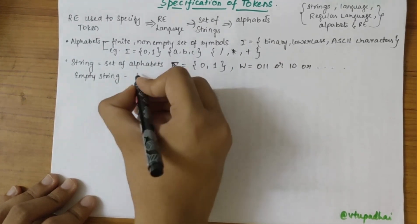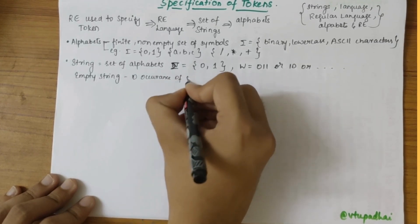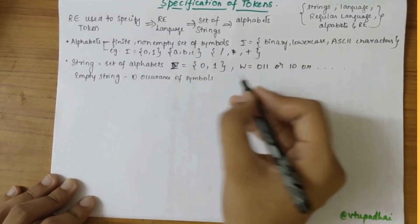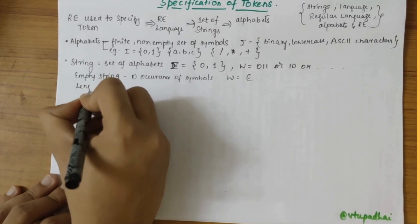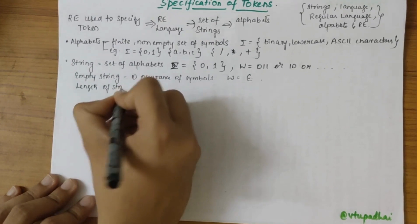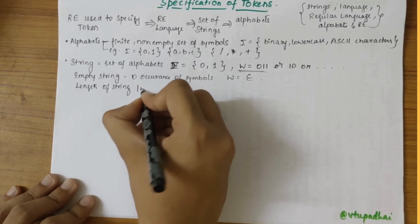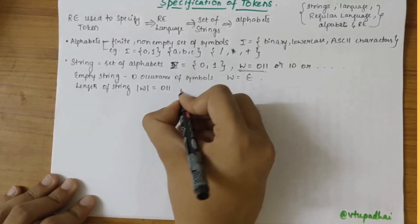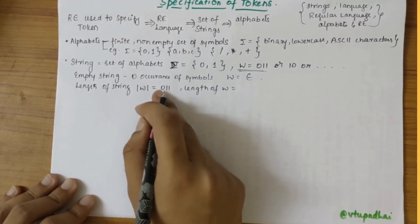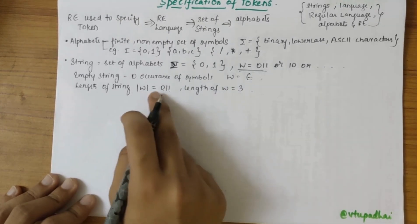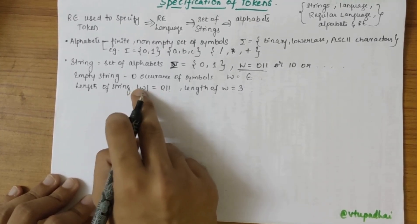Next, under strings, we need to understand what an empty string is. An empty string is a string with 0 occurrence of symbols — meaning there are no symbols at all — and it is depicted with epsilon. We can also find the length of a string using mod. For example, if W equals 0, 1, 1, the length of W is 3, since there are three symbols.